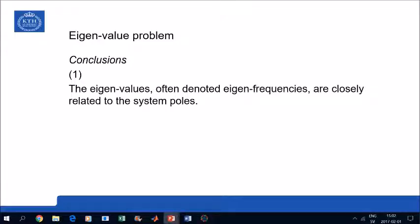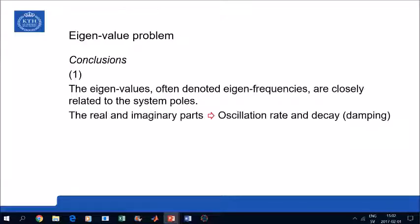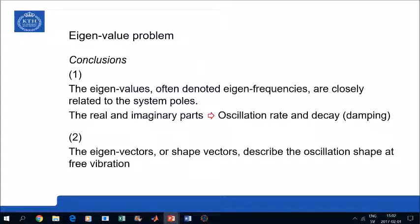And what remains then is the free vibrations given by the eigenvalue and the eigenvector. So, to conclude, first of all, the eigenvalues, which we often denote eigenfrequencies, are closely related to the system poles. The real and imaginary parts of the eigenvalues, that is the system poles, gives the oscillation rate and decay, that is the damping of the system.